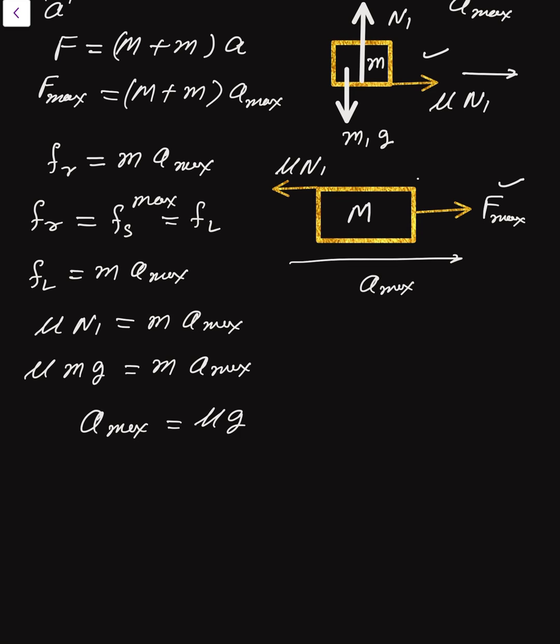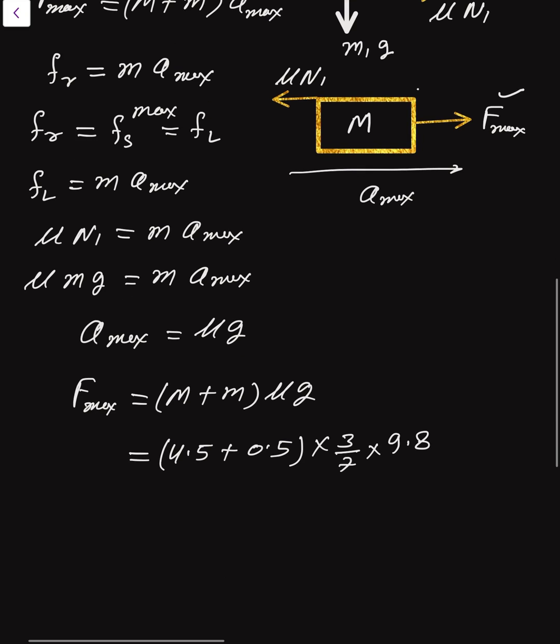Put the value of a max into equation number one. Then F max will be equal to capital M plus small m into μ into g. That is 4.5 plus 0.5, multiplied by 3/7, multiplied by 9.8.